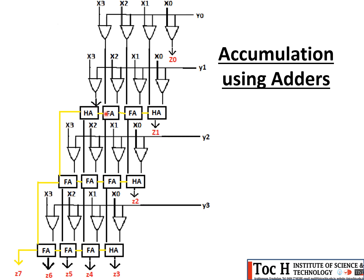The yellow line represents the path of the carry bit. After adding two input bits, the adder produces a sum value and a carry value; that carry is passed to the next adder stage. In the second adder row, the first intermediate result output from the first adder row is added with PP3 — the partial product obtained by multiplying the third bit of the multiplier with the multiplicand.